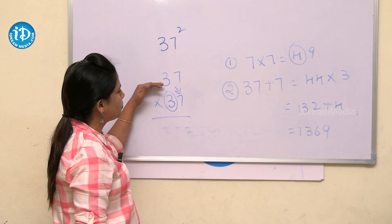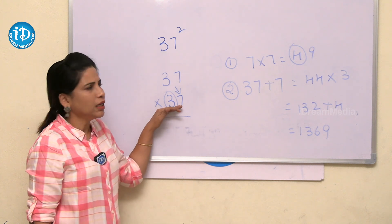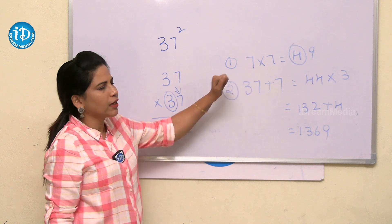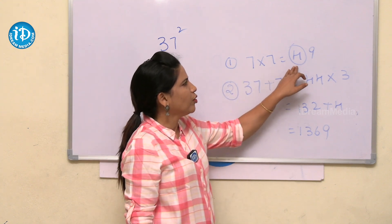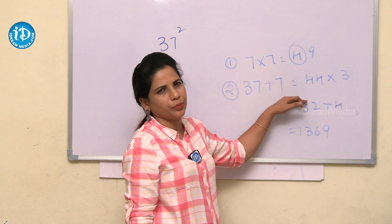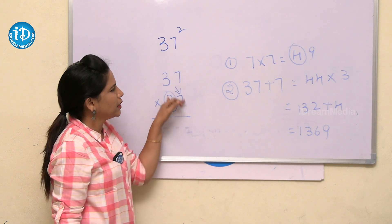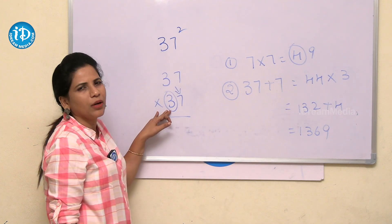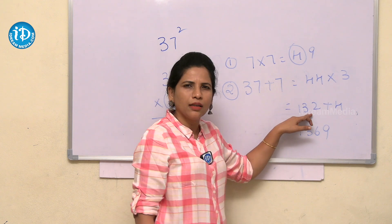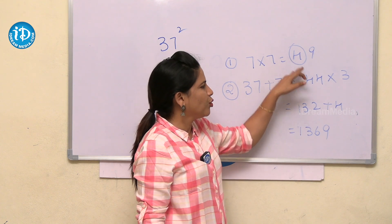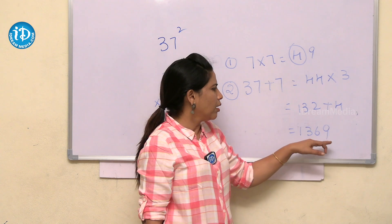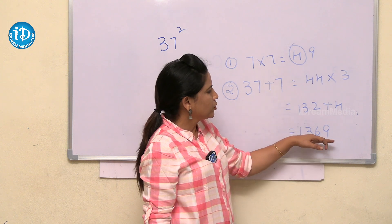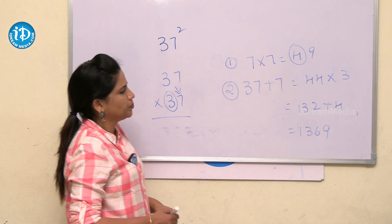To explain 37 into 37 once more: the unit digit multiplication 7 into 7 becomes 49. Whenever we get 2 digits, we carry forward the first digit — 4 — to the next step. Then 37 plus 7 becomes 44, and 44 into the tens digit 3 gives 132. Adding the carry forward 4 gives 136, and placing the unit digit 9 gives the final answer: 1369.